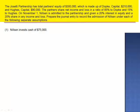The partners share net income and loss in a ratio of 85% to Dopke and 15% to Hughes. On November 1st, Nilsen is admitted to the partnership and given a 20% interest in equity and a 20% share in any income and loss.